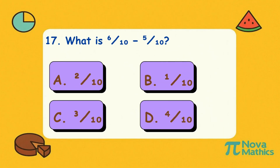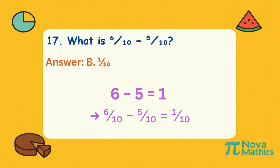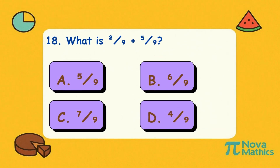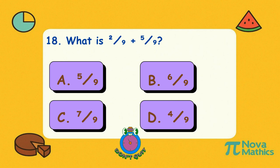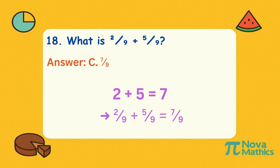Seventeen. What is six-tenths minus five-tenths? Six minus five is one, so the answer is one-tenth. Eighteen. What is two-ninths plus five-ninths? Two plus five is seven. The bottom number stays nine. That makes seven-ninths.